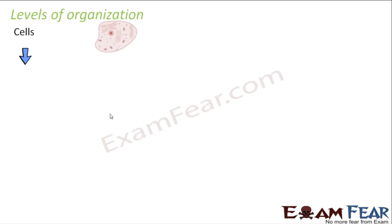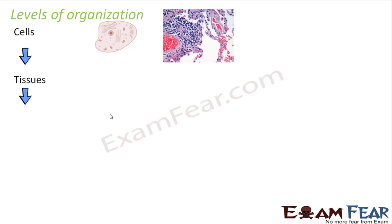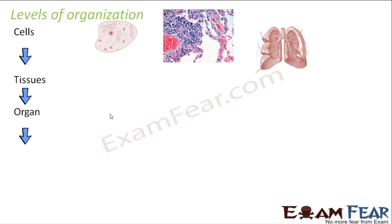With this, let us look at the level of organization — the different levels of formation of an organism. The very first level is the cell, which is the basic building block of a living organism. The next level is tissue — when cells group together to perform a specific function, they form tissues. Tissues then group together to form something known as an organ.